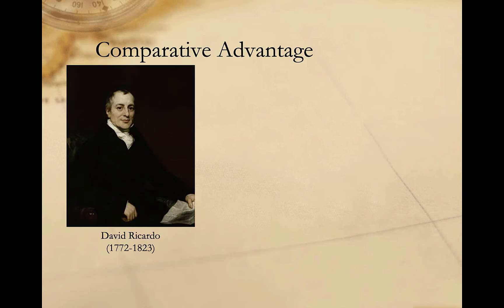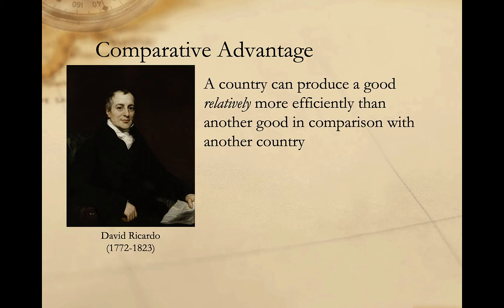But is it possible for a country to have absolute advantage in both goods and still benefit from trade? According to the theory of comparative advantage, the answer is yes. The theory of comparative advantage was first articulated by the British economist David Ricardo in 1817, though its historical roots go back much further. Comparative advantage refers to the situation where a country can produce a good relatively more efficiently in comparison with another country, even if in absolute terms it cannot. Paul Krugman, a Nobel Prize-winning economist, has described it as one of the most powerful yet most counterintuitive ideas in economics.